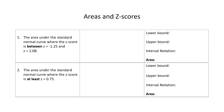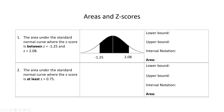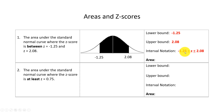Number 1: find the area under the standard normal curve when the z-score is between negative 1.25 and 2.08. Let's draw a picture. The lower bound is negative 1.25 and the upper bound is 2.08. Using Table 5, we first look up the area to the left of 2.08, then look up the area to the left of negative 1.25, and subtract the two. You should get a probability of 0.875.